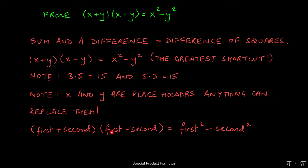And when we multiply these two, we always square the first term minus square the second term.